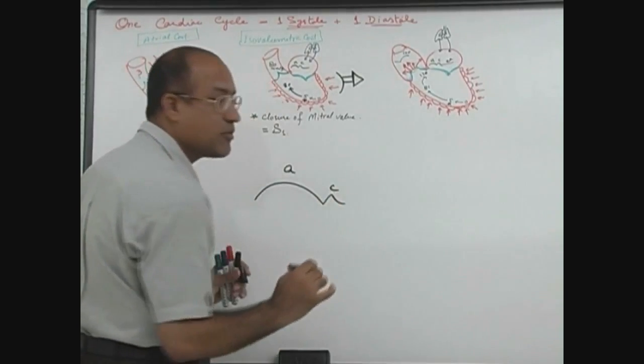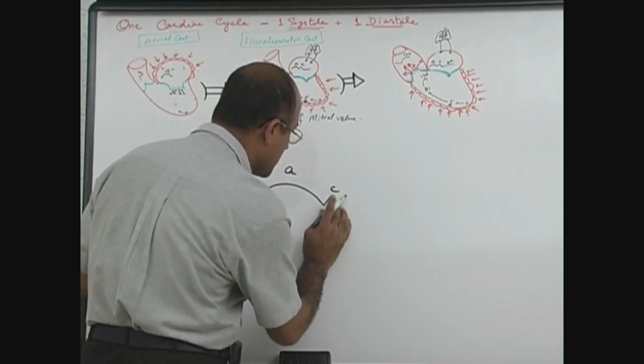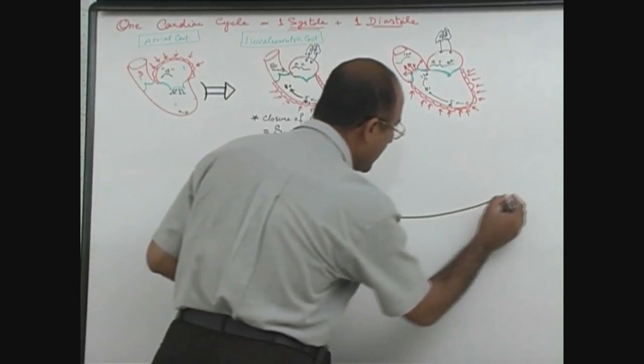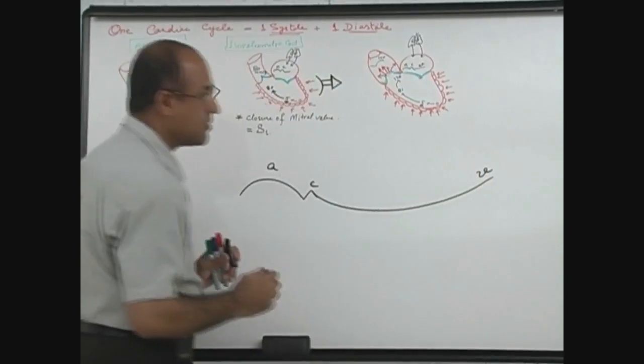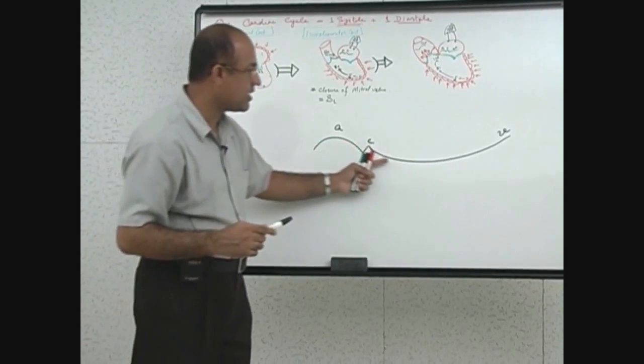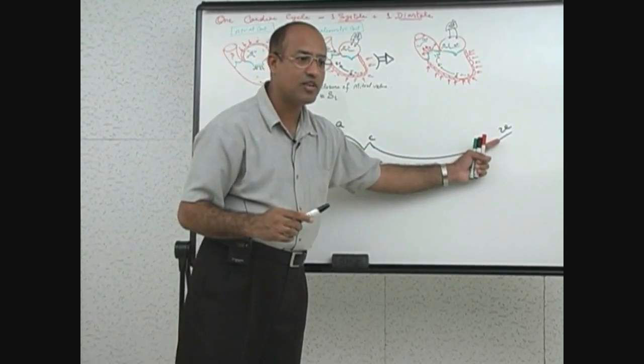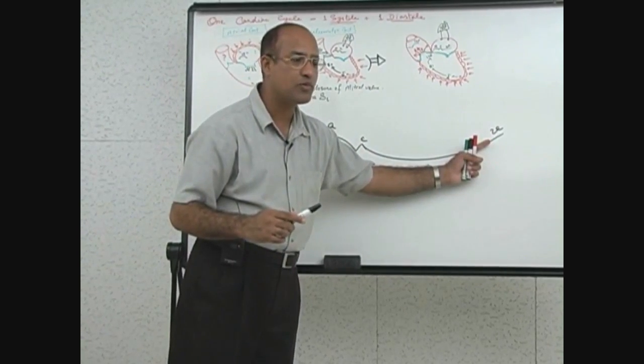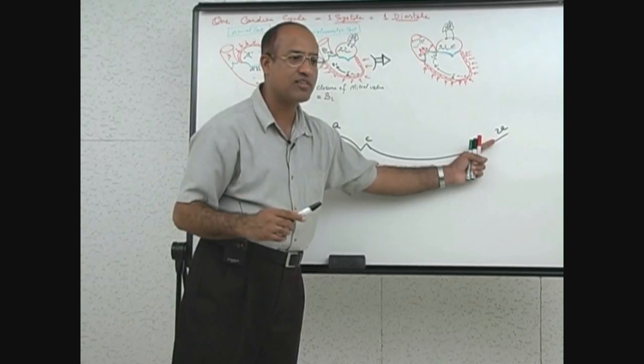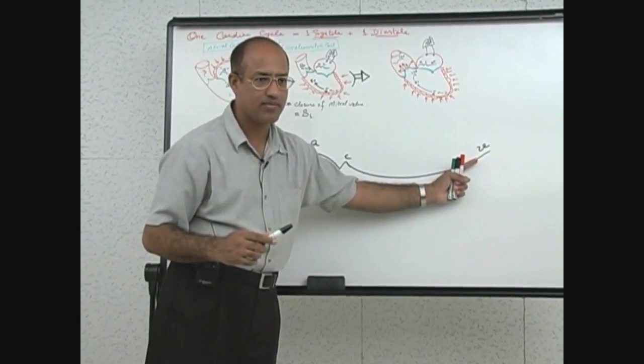This is A wave representing mechanical event. After that there was C wave which was representing onset of ventricular contraction, and after that this is the V wave showing how the pressure is progressively increasing into atrium as it is accumulating more and more venous blood coming from the lungs, and it is behaving like a reservoir or as a tank.